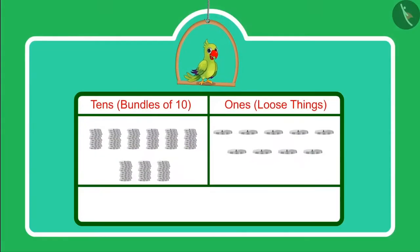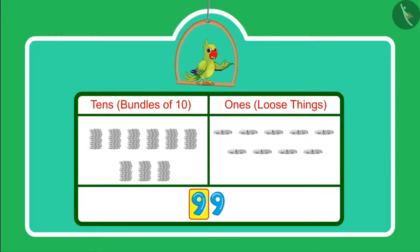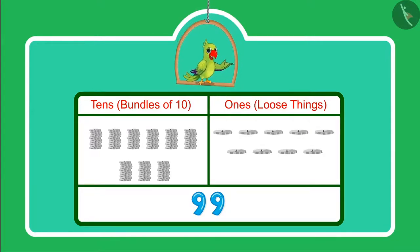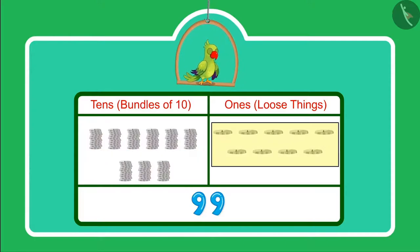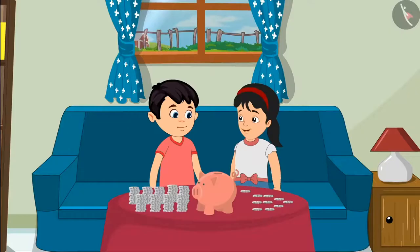Yes children, we write 99 like this. Here 9 is in the tens place and this 9 is in the ones place. That means we have 9 tens — which can also be called 9 bundles of tens — and 9 ones.